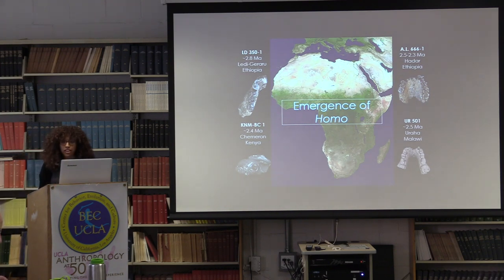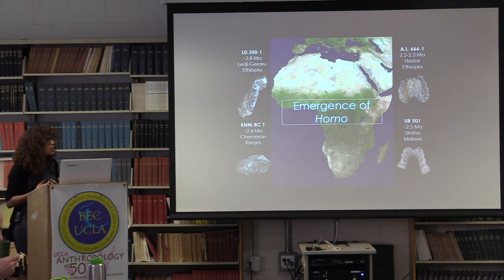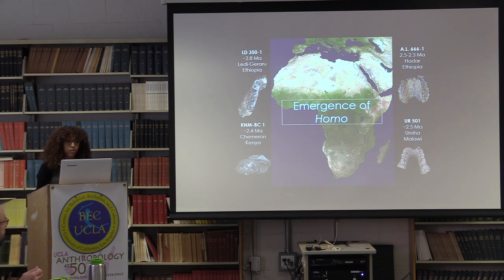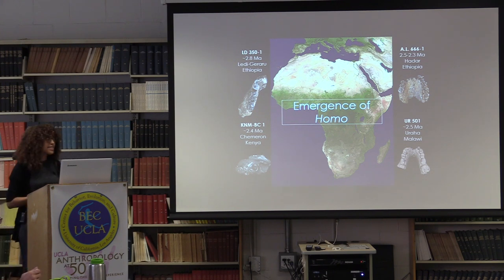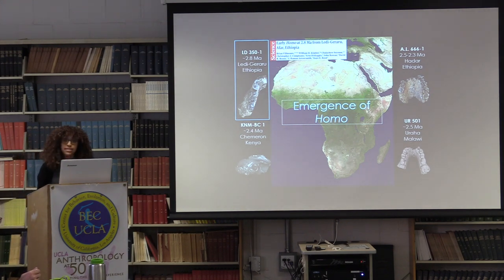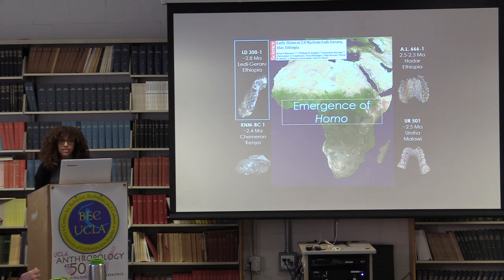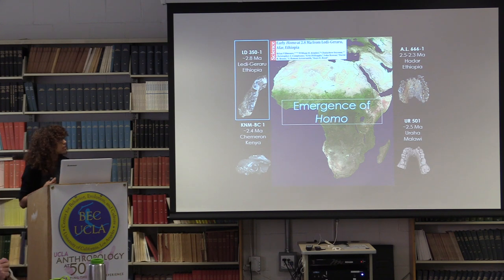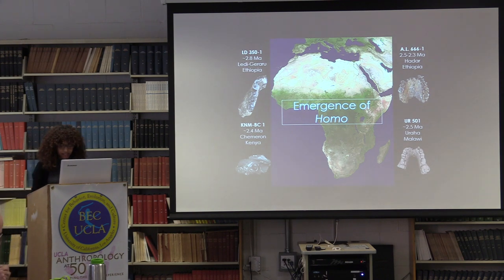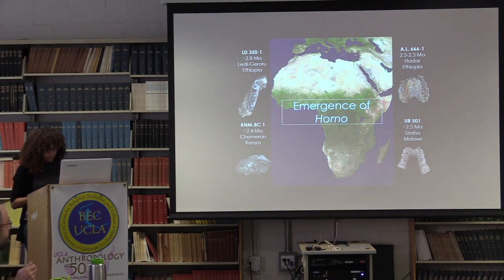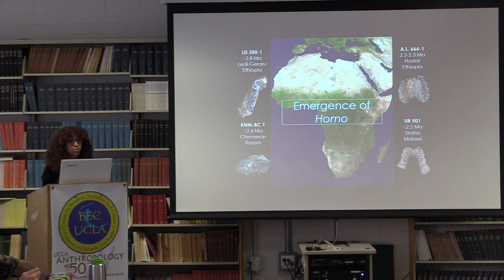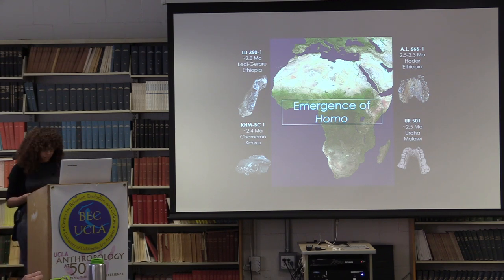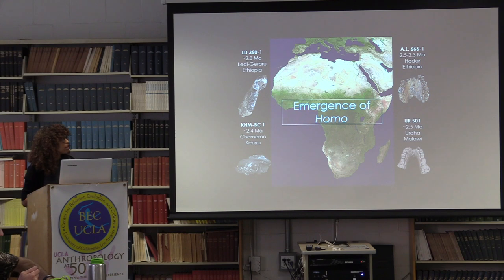We also know from recent fossil finds and stone tool discoveries that our previous attempts to define and confine Homo to a specific suite of characters at a specific time and place is questionable. What do we know about the origin of Homo? We know that the genus Homo first appears in the fossil record just shy of three million years ago. The recently discovered mandible from Ledi Geraru in Ethiopia pushed back the first appearance of Homo-like morphology from 2.5 to about 2.8 million years. Also on the slide are other pre-2 million year old specimens, such as the Uraha mandible from Malawi, the Hadar maxilla from Ethiopia, and the Chemeron temporal from Kenya.